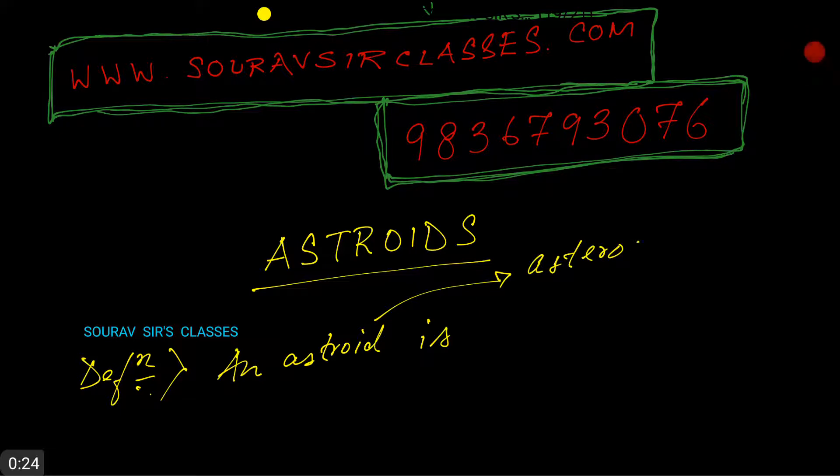Not to be confused with this. So an asteroid is a hypocycloid - I'll come to this part later.